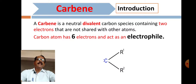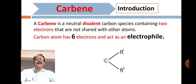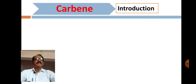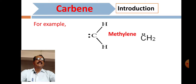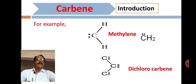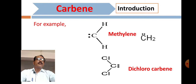In carbene, the carbon atom has six electrons in its valence shell, and it acts as an electrophile. For example, CH₂ is methylene carbene, and CCl₂ is dichlorocarbene. Dichlorocarbene is the first carbene that was discovered.